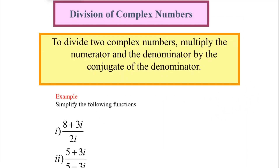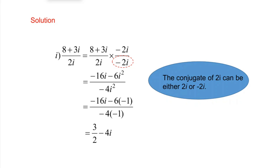Division of complex numbers. To divide two complex numbers, multiply the numerator and denominator by the conjugate of the denominator. For example, to simplify (8 + 3i) / 2i: the conjugate of 2i can be −2i, so we choose −2i. Multiply numerator and denominator by −2i, expand, substitute i² with −1, and get the answer in a + bi form.